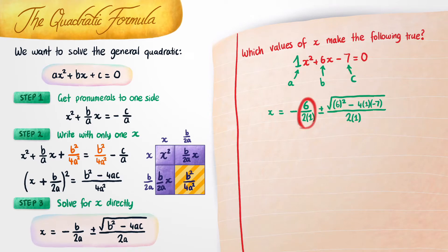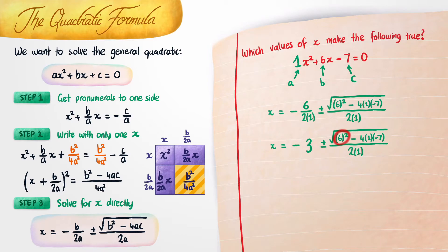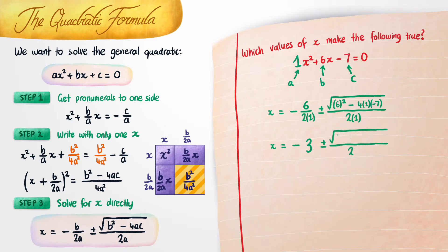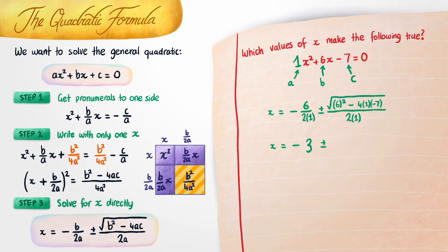Minus 6 on 2 times 1 is the same thing as minus 3. Now 6 squared is just 36, but then minus 4 times 1 times minus 7 is just the same thing as 28 — keep in mind that this negative and this negative just cancel. We can continue simplifying: 36 plus 28 is 64, so we replace that. The square root of 64 is 8, since 8 times 8 is 64. And when you divide 8 by 2, you get 4. So the answer is minus 3 plus minus 4. In the positive case we get positive 1, and in the negative case we get minus 7 — exactly as we did before.